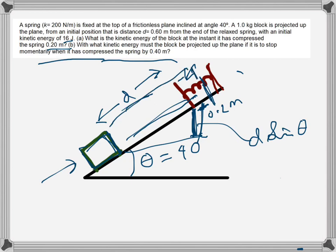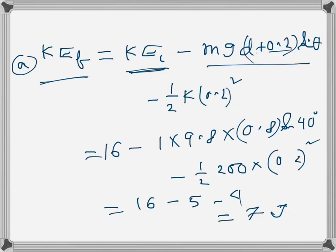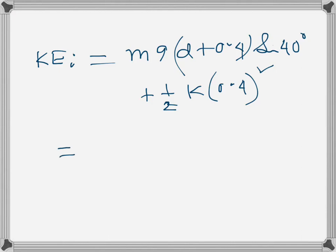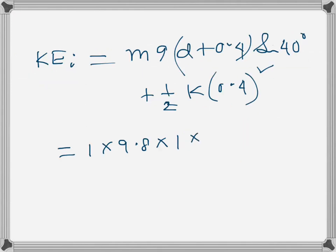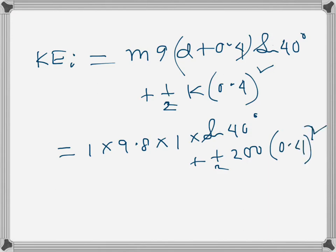The distance is d + 0.4 and the height is also (d + 0.4)·sin40°. Substituting: 1×9.8×(0.6 + 0.4)×sin40° plus ½×200×(0.4)². Here d + 0.4 equals 1, since d is 0.6. This gives approximately 22.3 joules as the required initial kinetic energy.